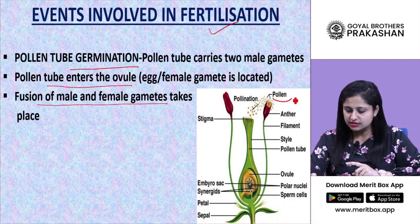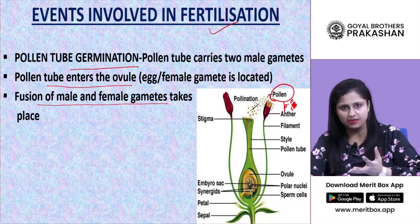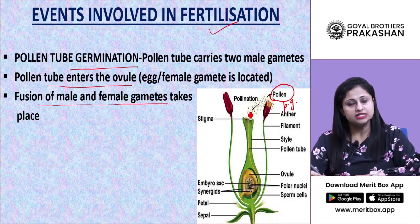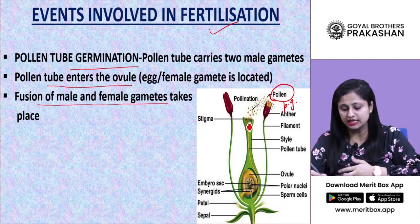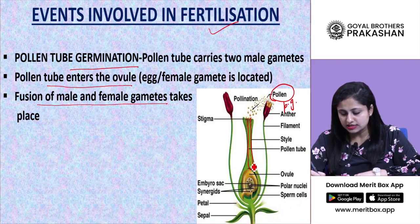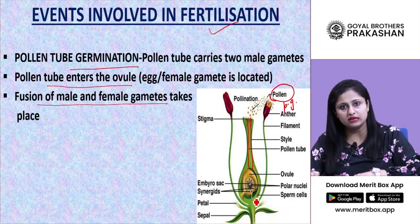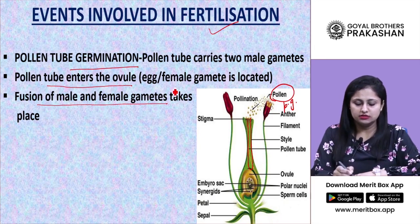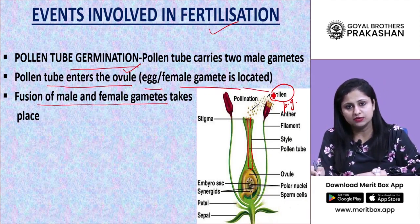Pollen grains land on the stigma part of the female plant body. If compatibility exists and it is the same species, the pollen tube starts germinating inside the style — this stock-like or flask-shaped structure. The pollen tube grows downward inside the style and later reaches the female gametophyte, that is the ovule, where the egg or female gamete is located.